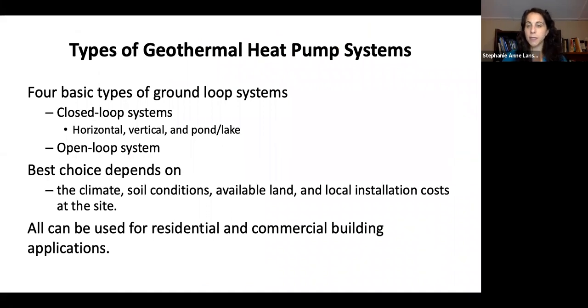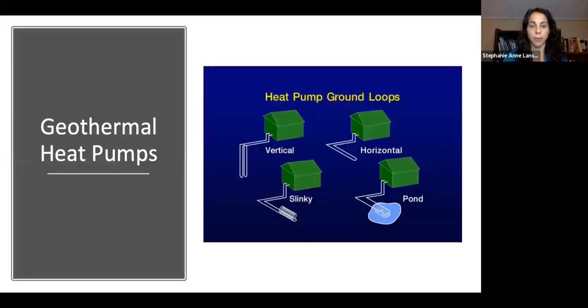There are four basic types of ground loop systems for heat pumps: closed systems, which are horizontal, vertical, or pond/lake, and open loop systems. The best choice depends on climate, soil conditions, land, and local installation costs. All can be used for residential or commercial buildings.